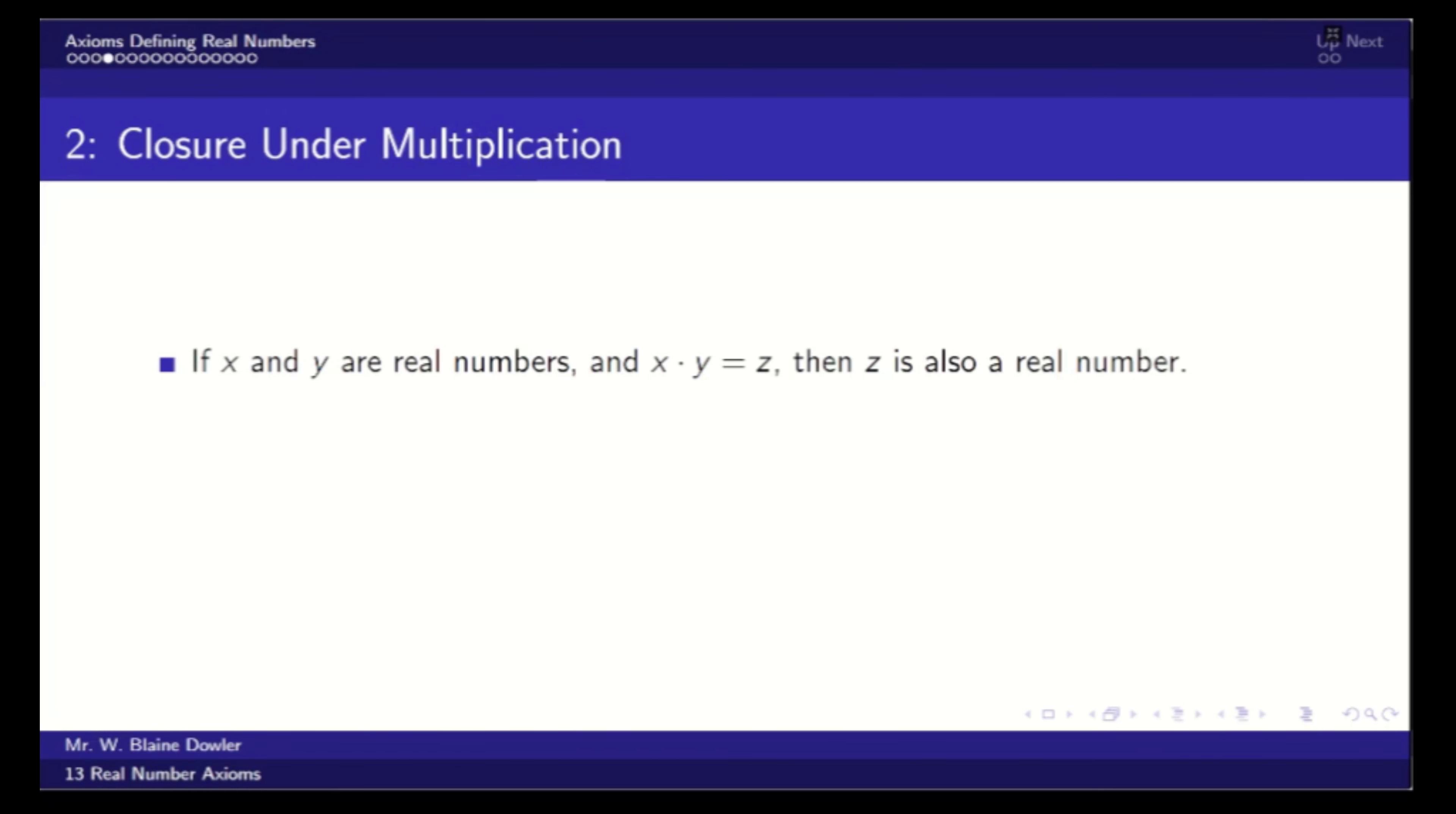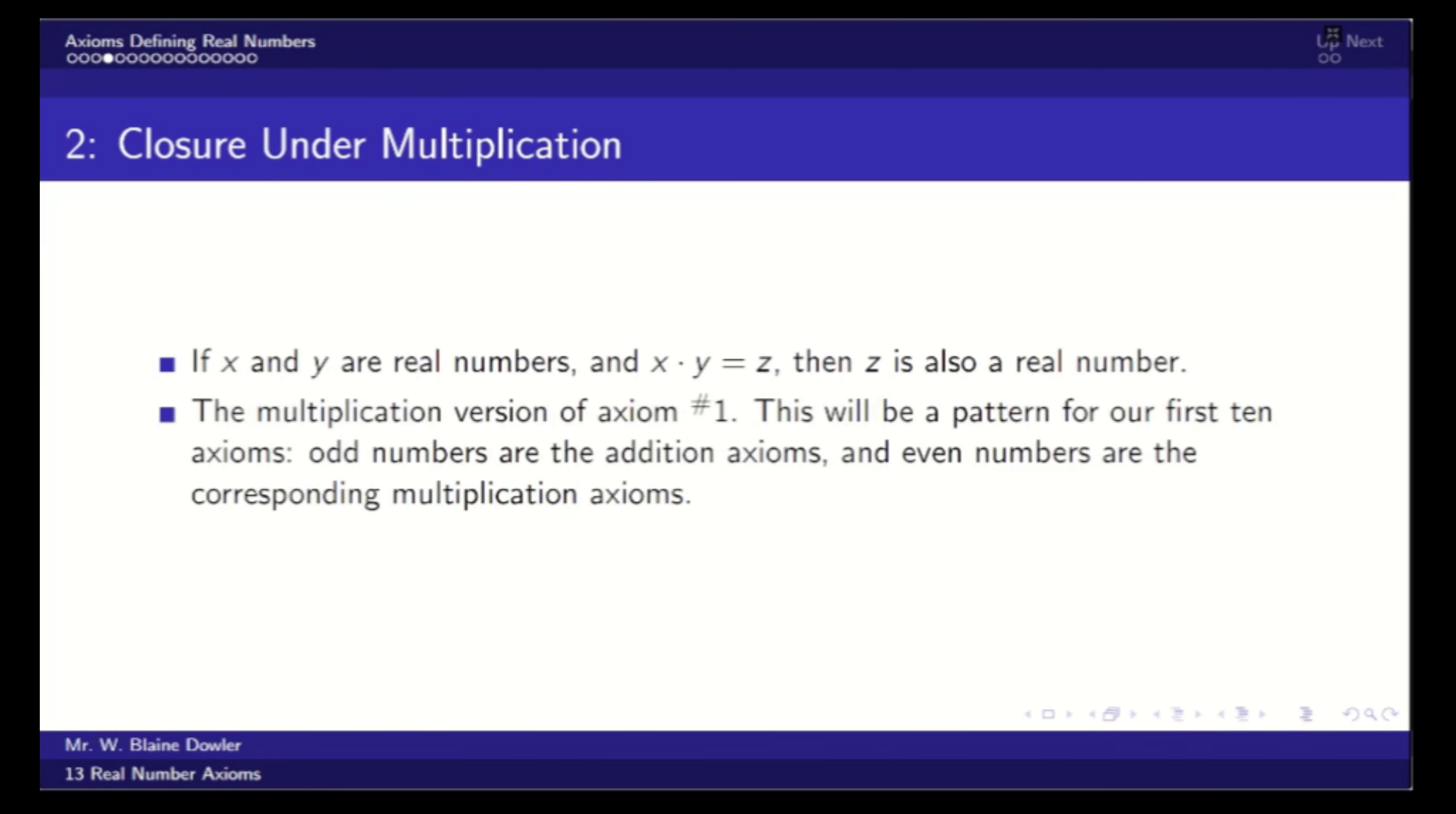Our second axiom is closure under multiplication. So if x and y are real numbers and x times y is z, then z is also a real number. This is just the multiplication version of axiom number one. This will actually be a pattern for our first 10 axioms, alternating between addition and corresponding multiplication axioms.